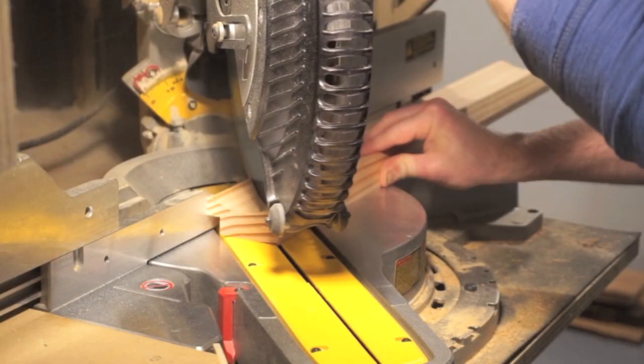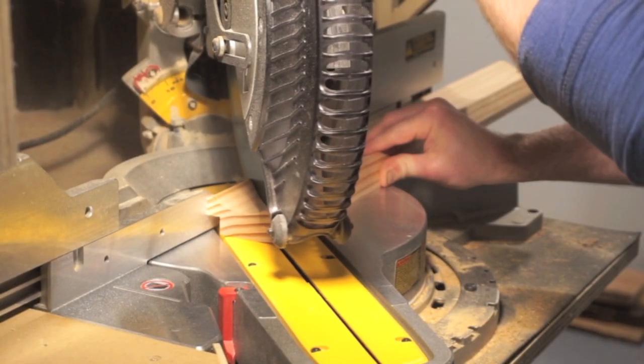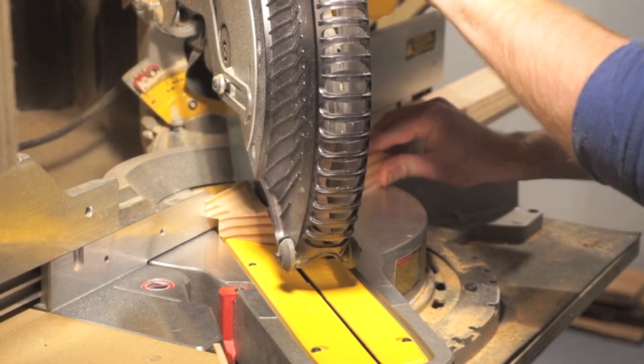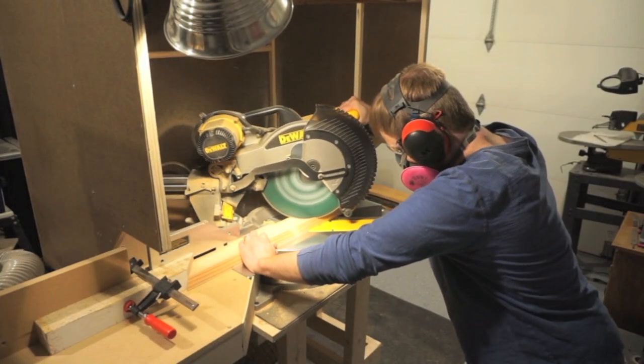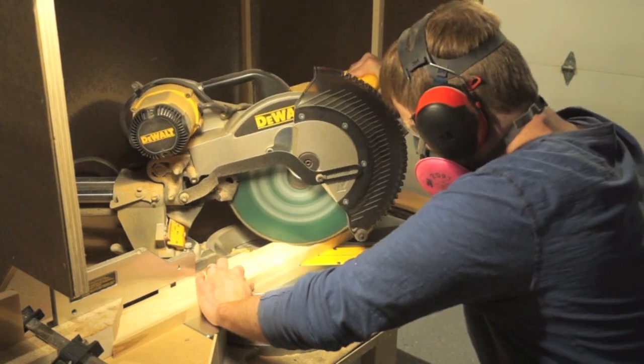Well, now it's time to cut the 45 degree miters in each of our frame pieces. To make this process simple, I recommend cutting a 45 degree miter on the same side of all your pieces and then use a stop block to cut the other sides all equally.